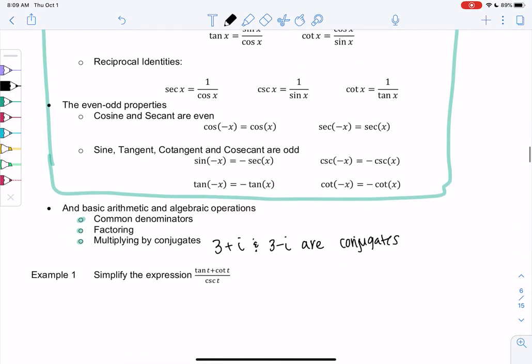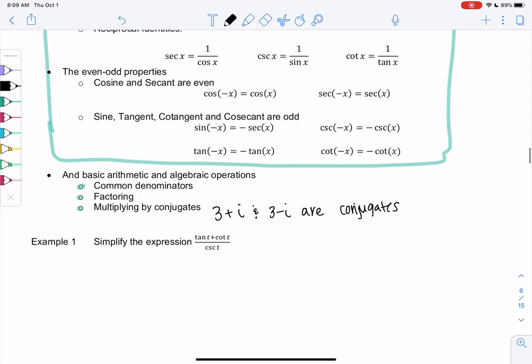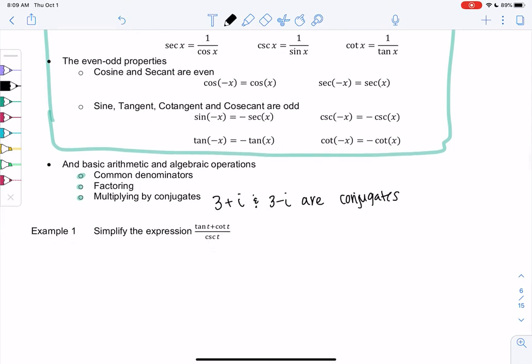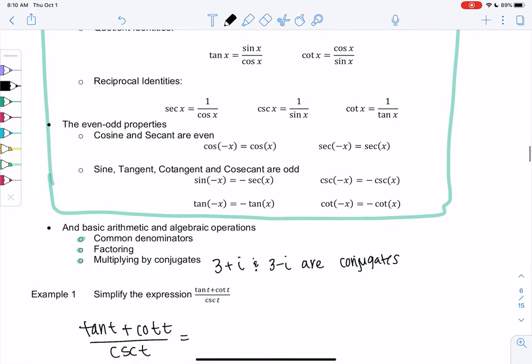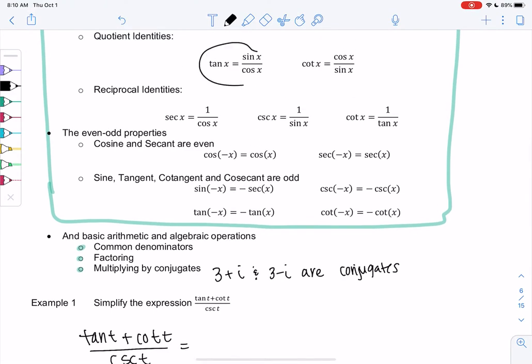So let's just simplify and kind of see what happens. So what we're going to do is we're going to use some of these identities to simplify tangent of t plus cotangent of t all over cosecant of t. So I think the easiest identities here would be to use the reciprocals and the quotients.